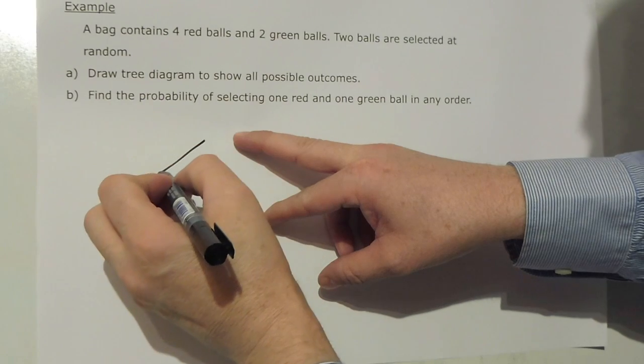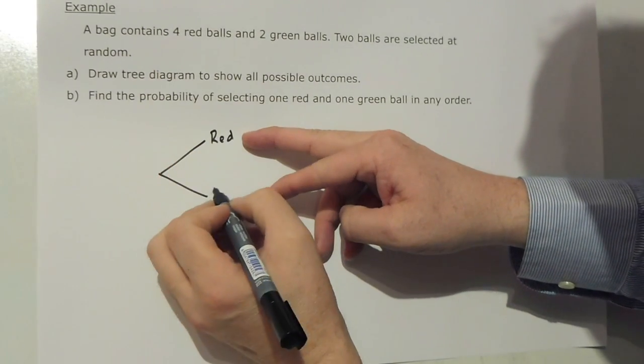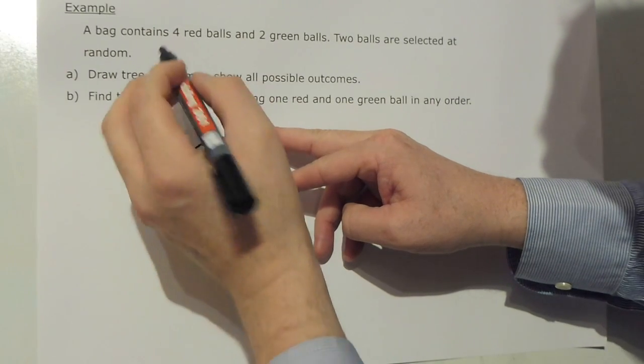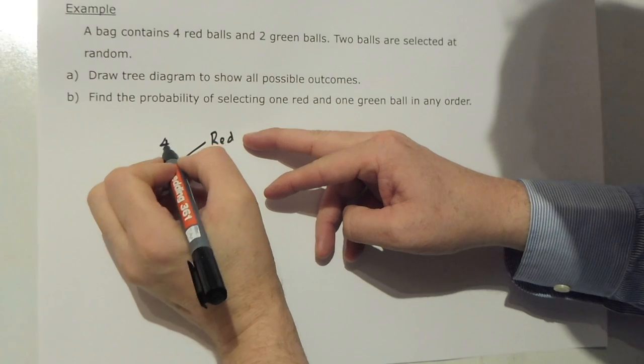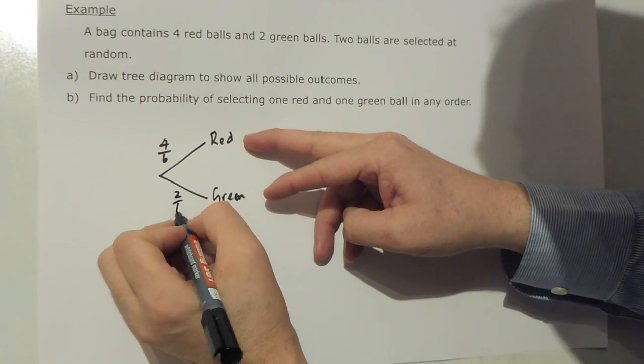Here we're looking at a tree diagram and we're looking that the ball could be red or it could be green. The probability of red is 4 out of 6, the probability of green is 2 out of 6.